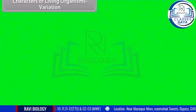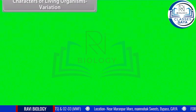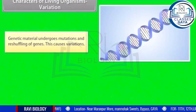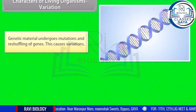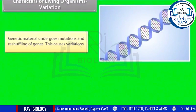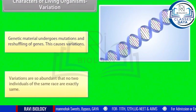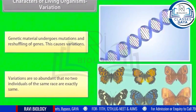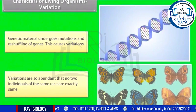Characters of living organisms — Variation: genetic material undergoes mutations and reshuffling of genes, which causes variations. Variations are so abundant that no two individuals of the same race are exactly the same.